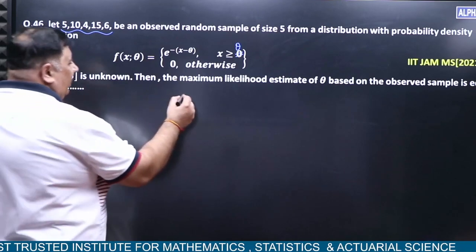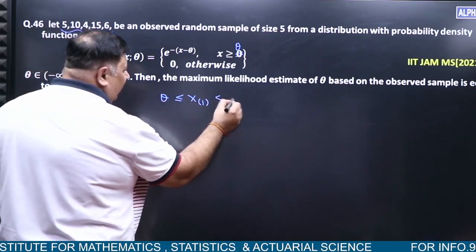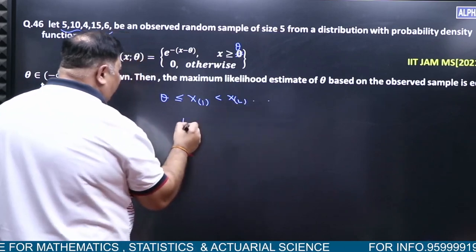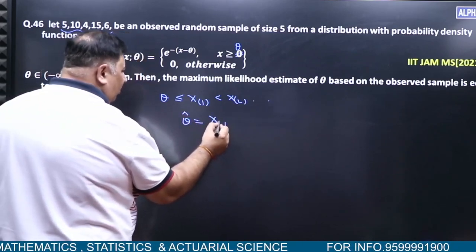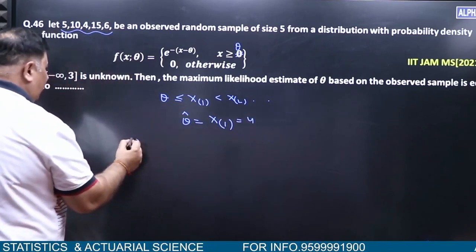Let's see what the range depends on. So x₁ is greater than or equal to theta, less than x₂. So theta cap is x₁. But x₁ means 4, but the theta interval gives us...